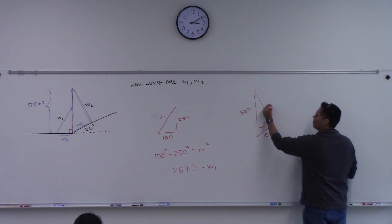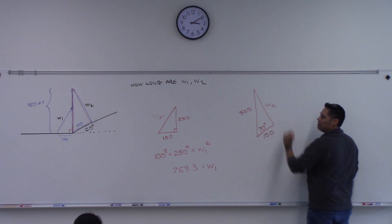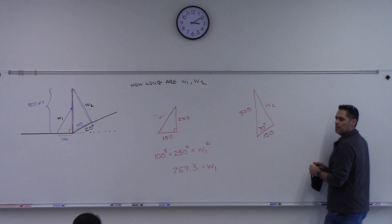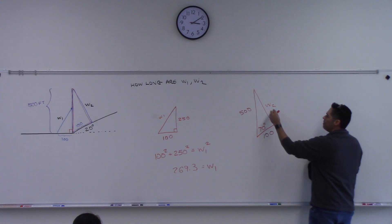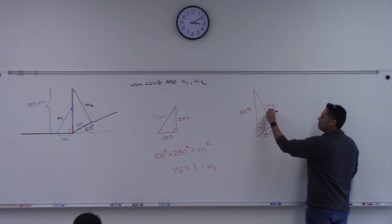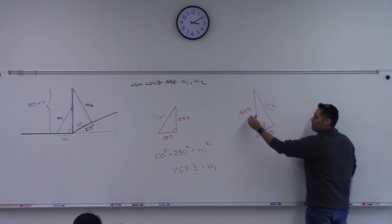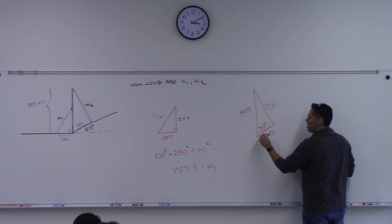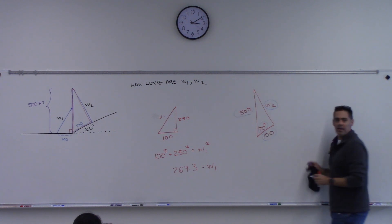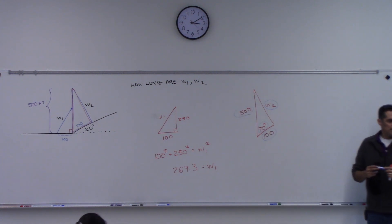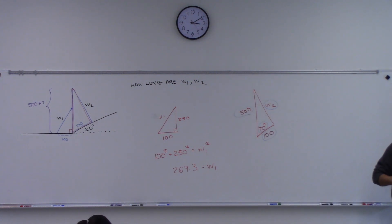W2 is this one — we want to know what W2 is. We have the angle across from it and we have the two sides next to it. Law of cosines.